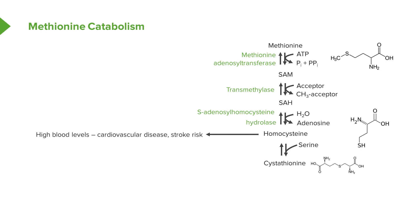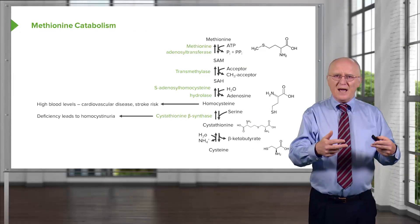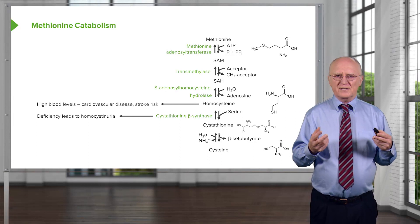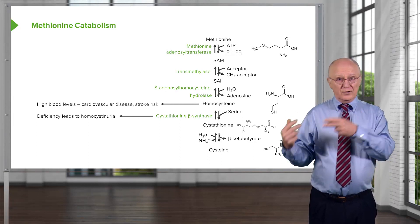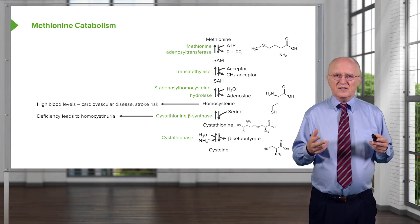In the next step, homocysteine combines with serine to make cystathionine, whose structure is drawn on the lower right. The enzyme catalyzing this is cystathionine beta synthase. A deficiency of this enzyme leads to homocystinuria, and since homocysteine accumulation has severe health consequences, this deficiency is quite serious. In the last reaction, cystathionine is converted into cysteine. This reaction involves a splitting out of beta-ketobutyrate, and water is required; the other half of the molecule loses an ammonium group to become beta-ketobutyrate. The enzyme catalyzing this reaction is cystathionase.